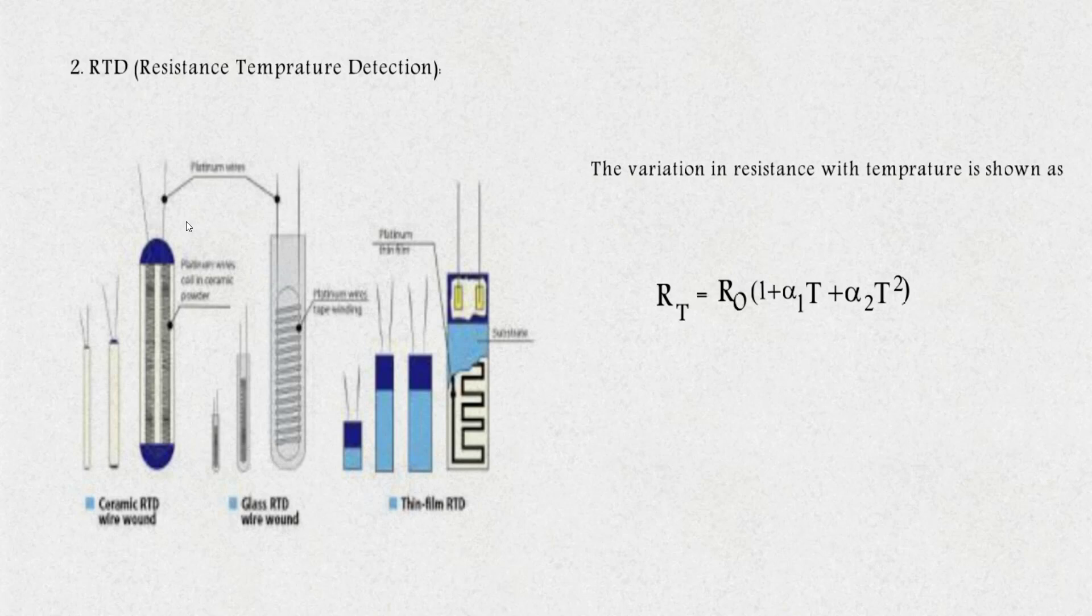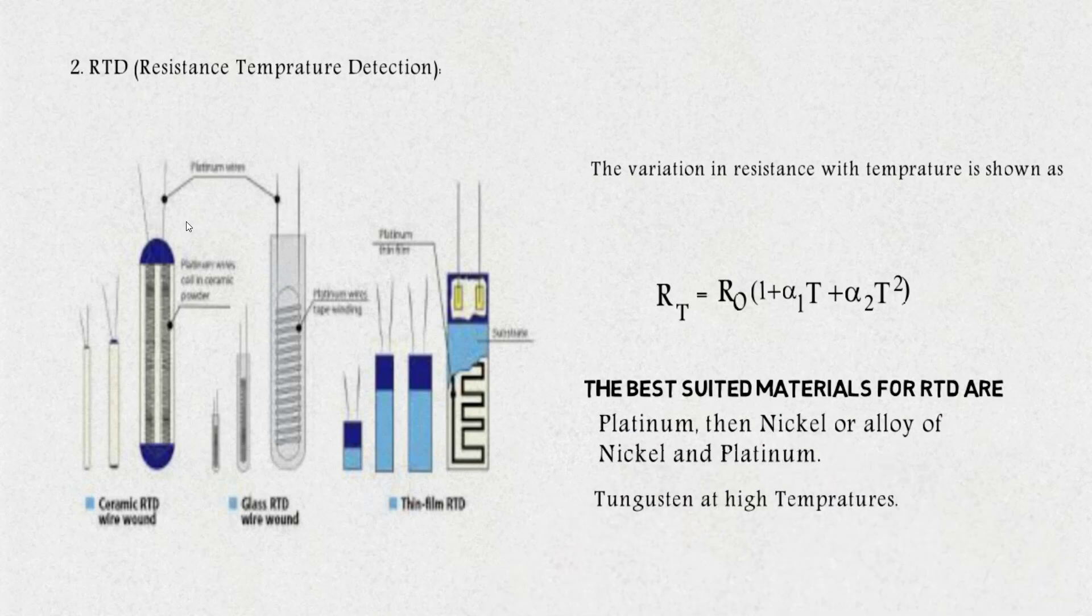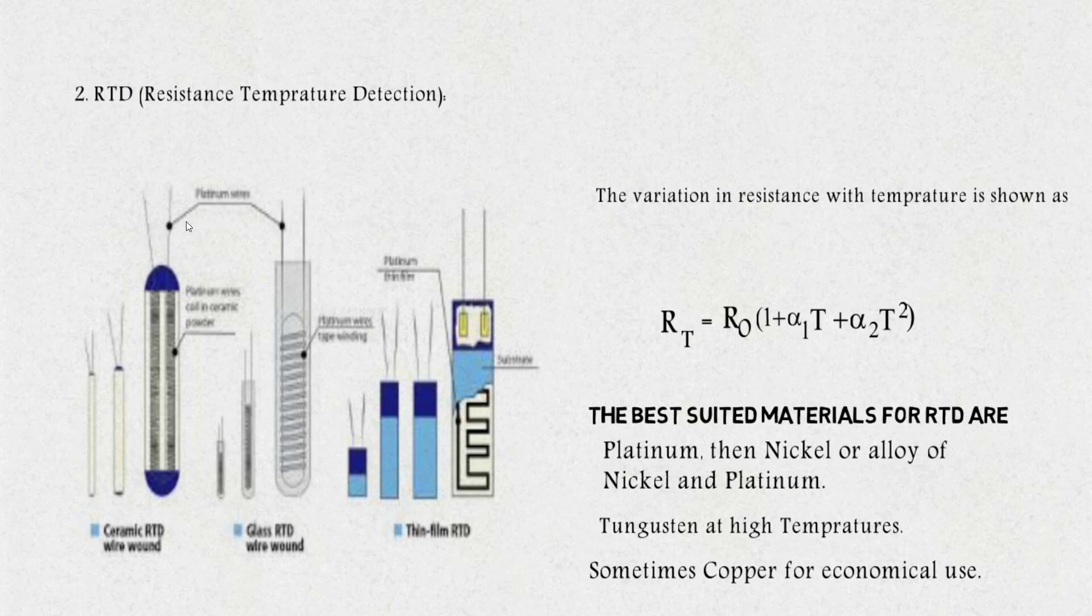The conductor used for RTD must have large change in resistance per unit change in temperature for higher resolution, high value of resistivity so that less conductor is required for RTD formation. The resistance of the conductor must have stable and continuous relationship with temperature. Most preferred materials for RTD are platinum, nickel, or their alloy. Thermistor is preferred at very high temperature and copper for educational or lab purposes. The quality of RTD made from alloy of platinum and nickel depends on the ratio they are mixed. The more the platinum, more effective measurement of temperature.